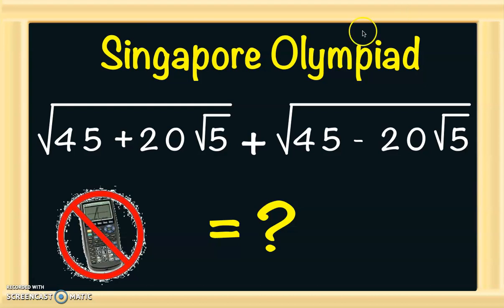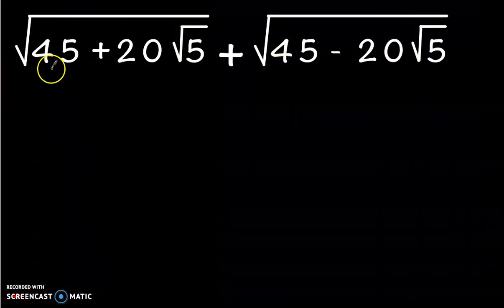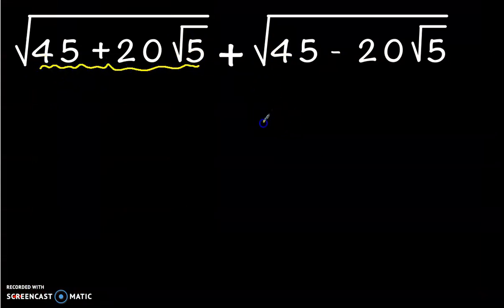Hello everyone, let's solve this Singapore Olympiad problem from 2006. We need to calculate the following expression without using a calculator. Now let's go ahead into the solution. The idea is about writing 45 plus 20√5 as something squared.